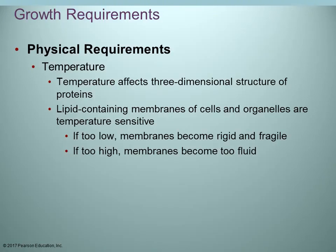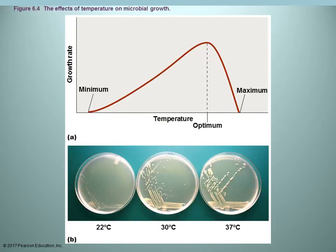Temperature is going to affect the three-dimensional shape of proteins. If there's a drastic change in temperature outside the normal optimum growth range for a particular organism, it can affect protein structure — and structure determines function — so proteins can become non-functional or denatured. Lipids can also be affected by temperature, and remember lipids are a major component of cell membranes. If temperature gets too low, membranes become very rigid and fragile and can break; if too high, they become too fluid.